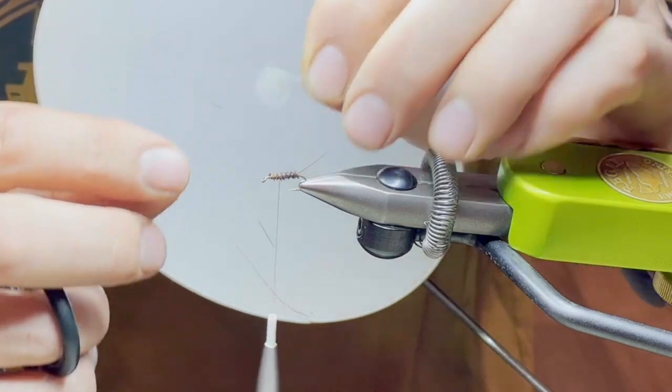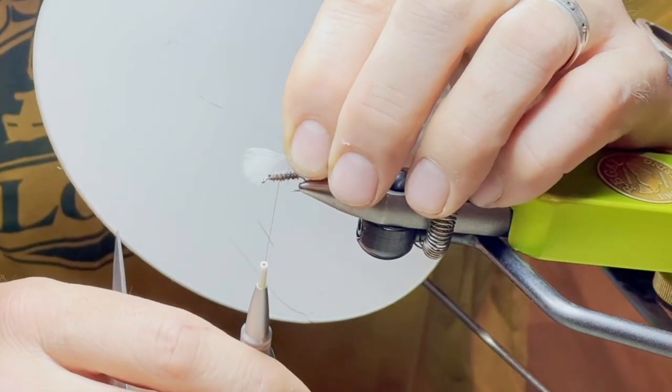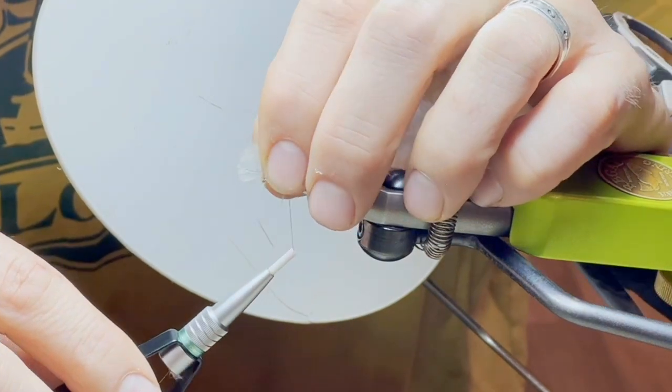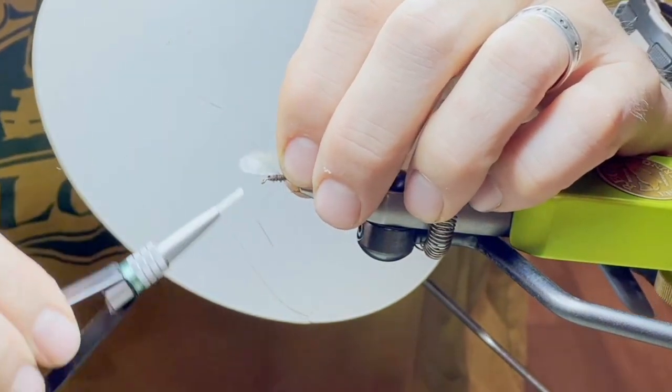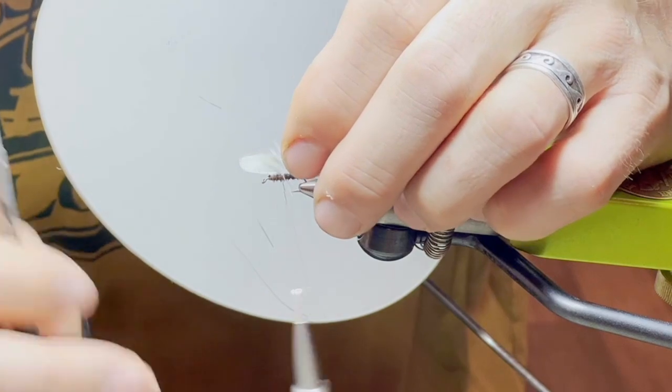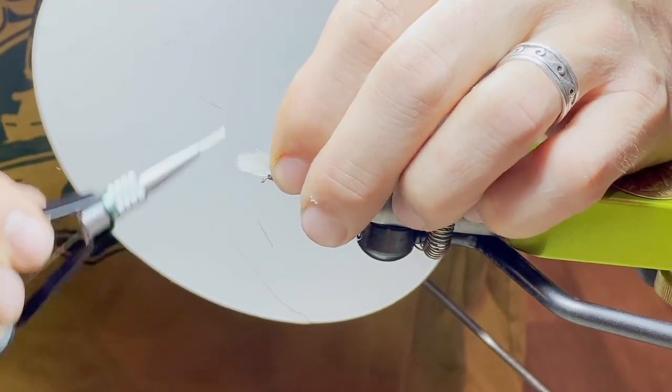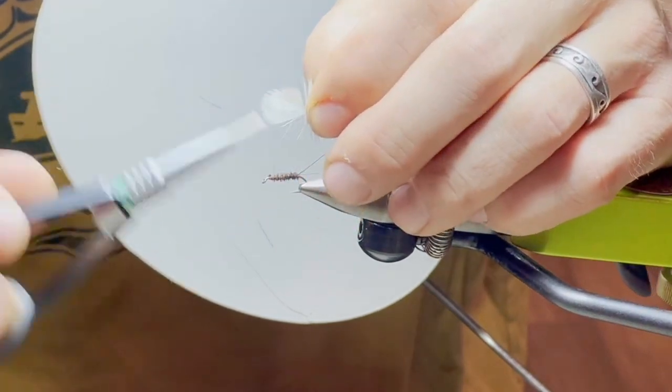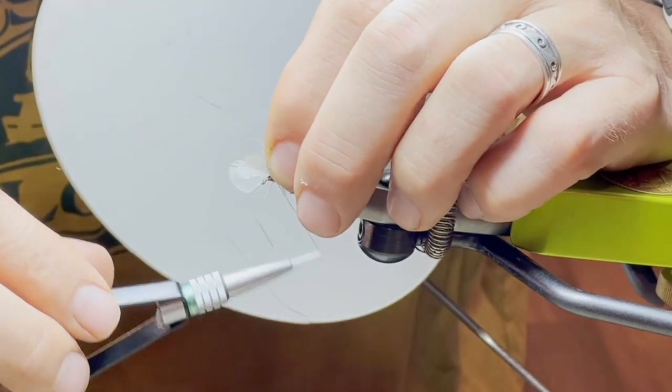What I do is I like to pull it back and get the two hen feathers I'm going to use paired up at this stage and try to get them standing up in front of the fly like that. Make sure I'm in the right spot. Setting your wings is the most important part of this fly, so take your time. If you don't like it, just redo. It only took a couple seconds to get it right.